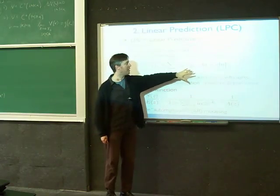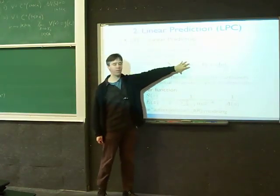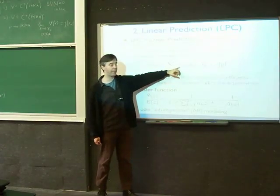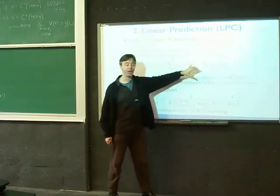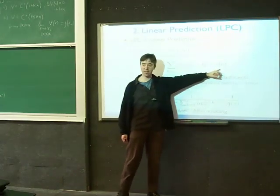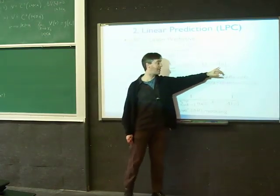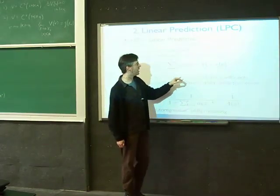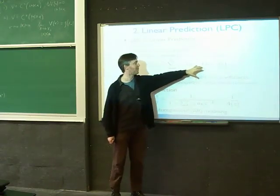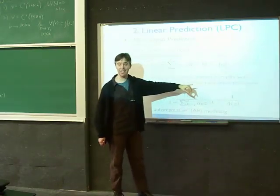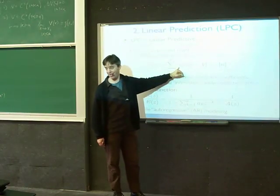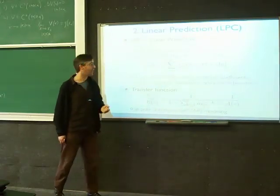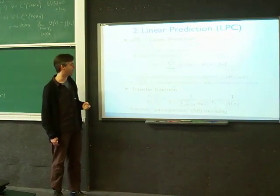What you do is square this, take the magnitude of this and differentiate with respect to the coefficients and solve for zero. That gives you the coefficients that minimize the energy in the residual — the least-squares optimal predictor. You set up a sum, sum E-squared of N over time, differentiate with respect to the A_k's, and find the A_k's that give zero derivative. It turns out that's a nice convex problem with a unique solution — that's the best solution.